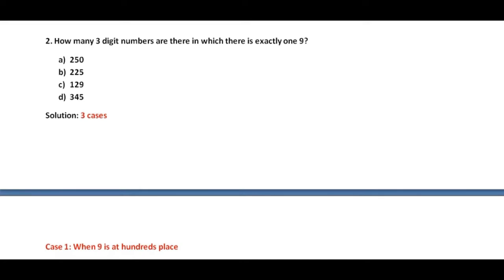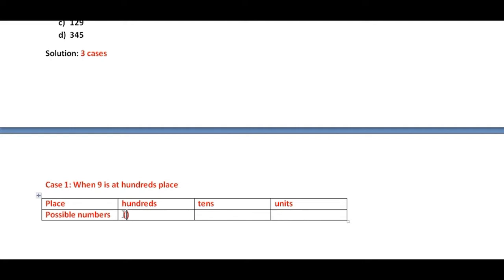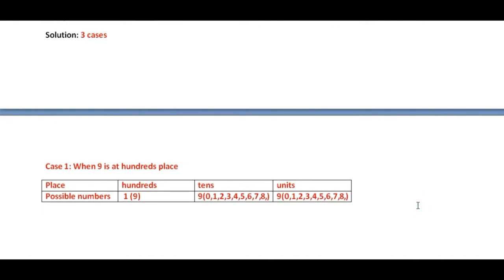Case 1: when 9 is at the hundreds place. It means only one number, that is 9, is placed at the hundreds place. At the tens place, we can place the rest of the 9 numbers apart from 9, which are 0, 1, 2, 3, 4, 5, 6, 7, 8. Similarly, at the units place, we can also place any of those 9 numbers. So for Case 1, total numbers are 1 × 9 × 9 = 81.